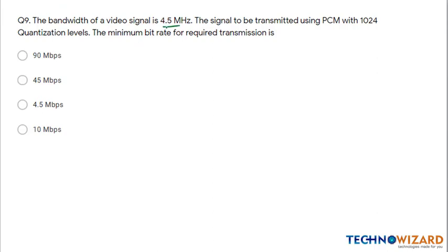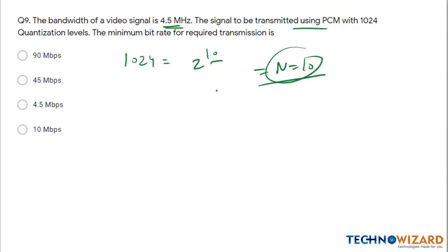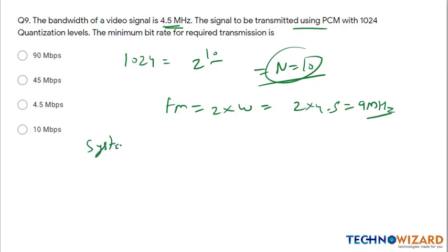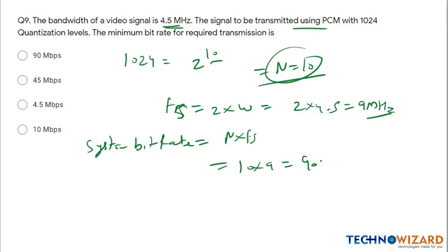Question 9: The bandwidth of the video signal is 4.5 MHz. The signal is transmitted using PCM with 1024 levels. Since 1024 = 2¹⁰, the number of bits n = 10. The maximum frequency = 2 × bandwidth = 2 × 4.5 = 9 MHz (this is FS). System bit rate = n × FS = 10 × 9 = 90 Mbps. Option A is the correct answer.